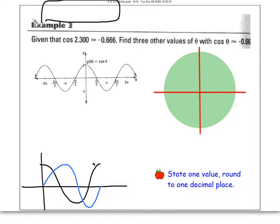Here's another way to look at the periodicity theorem in terms of a different perspective. Here they have, they've given us that the cosine of 2.3 radians is equal to negative 0.666. Find three other values that have the cosine of an angle equal to negative 0.666. So, they want us to find other angles that would go into here and give us this cosine value.